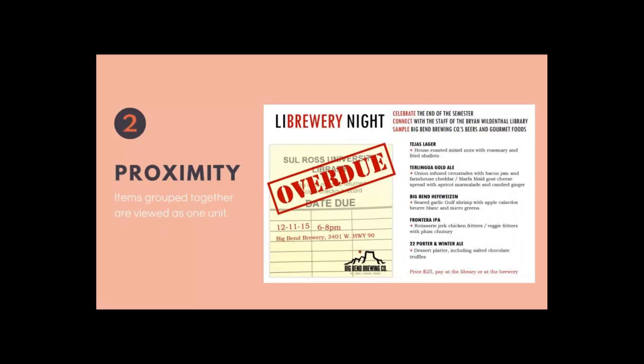The second design principle is proximity. Proximity means that items grouped together are viewed as one unit. You can use proximity to achieve a more organized look — this can be done with text or images. This is a design I created earlier this year — I wanted to get our faculty and librarians together more casually, so we went to a brewery and sampled beer and food from the local brewery. On the right side you can see the whole menu grouped together as text, and on the left side is the more library-related image — it all comes together because of the proximity of the design.